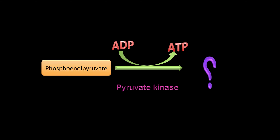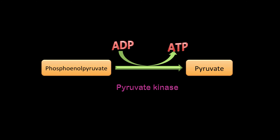Pyruvate: the enzyme is pyruvate kinase. This is the last reaction in glycolysis and you make ATP. This is your payoff reaction — you paid off your debts earlier and now you're going to make some ATP you can use. PEP is converted to the final product: pyruvate.